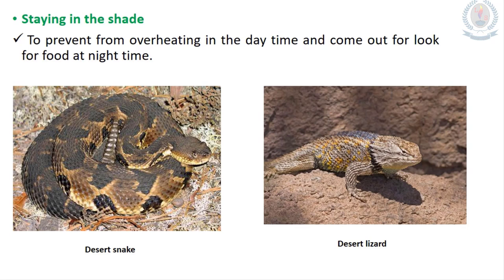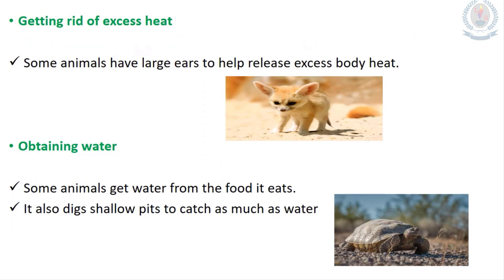Some animals stay in the shade to prevent overheating in the day and come out to find food at night. Desert snakes and desert lizards come out only at night. Some animals such as the desert fox have large ears to release excess body heat. The desert tortoise gets water from the food it eats, and some animals dig shallow pits to catch water.